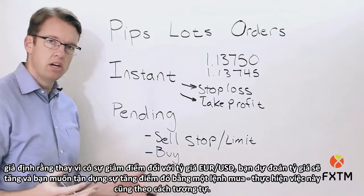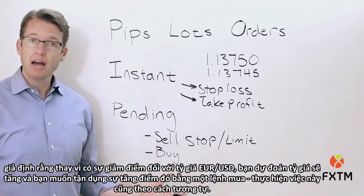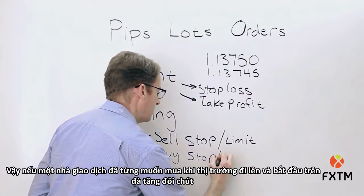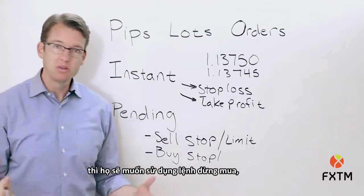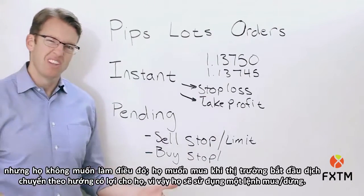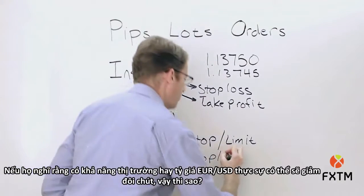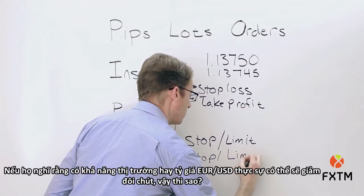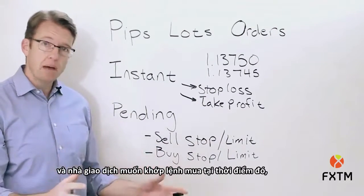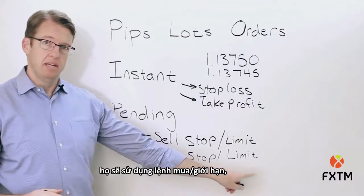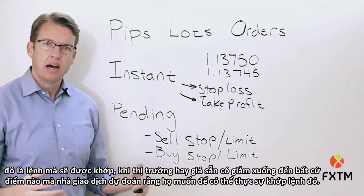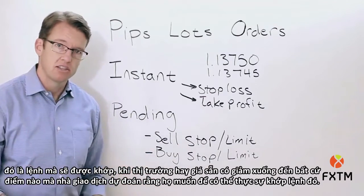The inverse applies for buy orders. If you're bullish on EUR/USD and want to buy as the market rises and gathers bullish momentum, you would use a buy stop, entering above the current market price. If you think the exchange rate may drop to a support level first and want to buy at that lower price, you would use a buy limit, which executes when the available price comes down to your specified level.